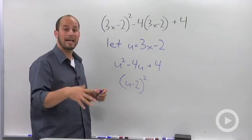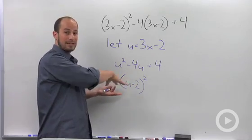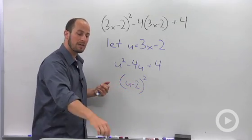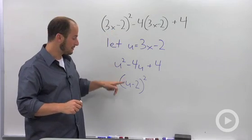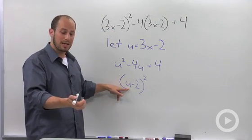Be careful, though, because a lot of people want to end right here. They want to say, I factored it down u minus 2. But if you look at it, our initial variable was x. It doesn't really make any sense to introduce a different variable as our end product.